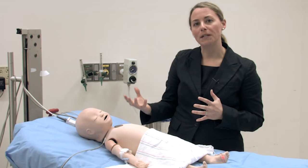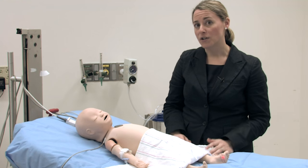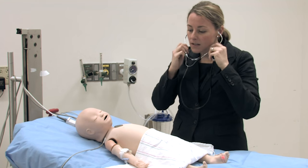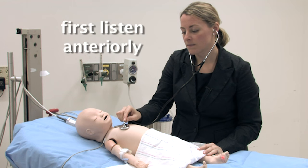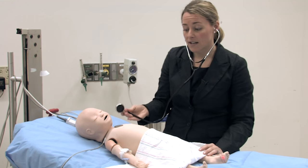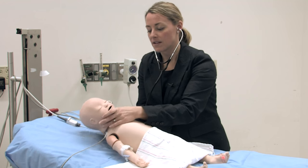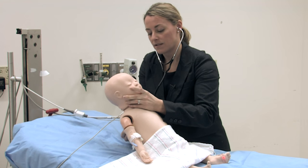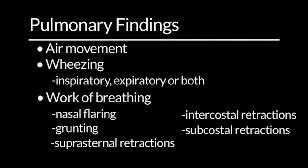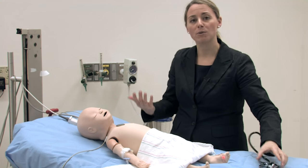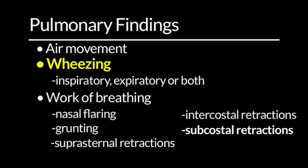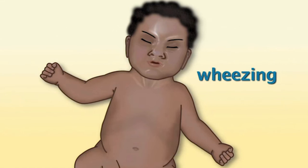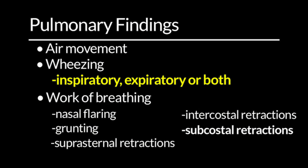Once I've globally looked at the patient and reviewed their vital signs, the next thing I want to do is actually examine the patient. I'm going to take my stethoscope and listen anteriorly — both inferiorly and superiorly — as well as posteriorly. I want to listen for air movement. Is the patient able to move air, or is their air entry extremely diminished? I want to listen for wheezing — does the patient have inspiratory wheezes, expiratory wheezes, or both?